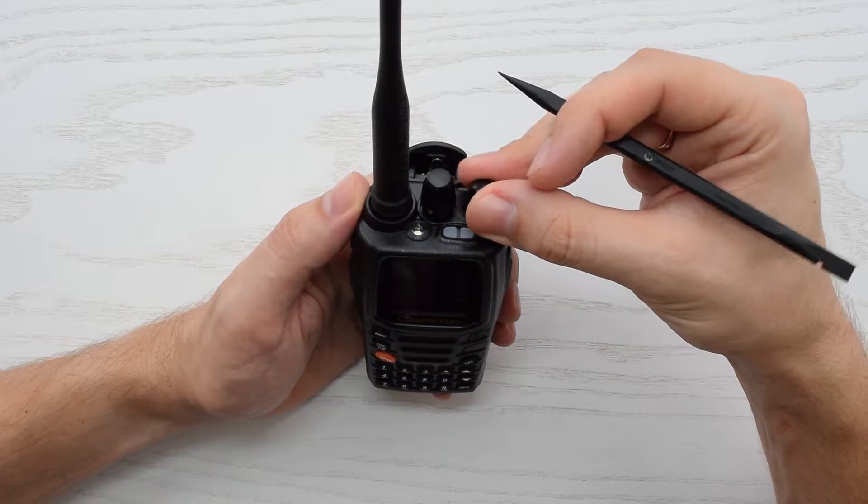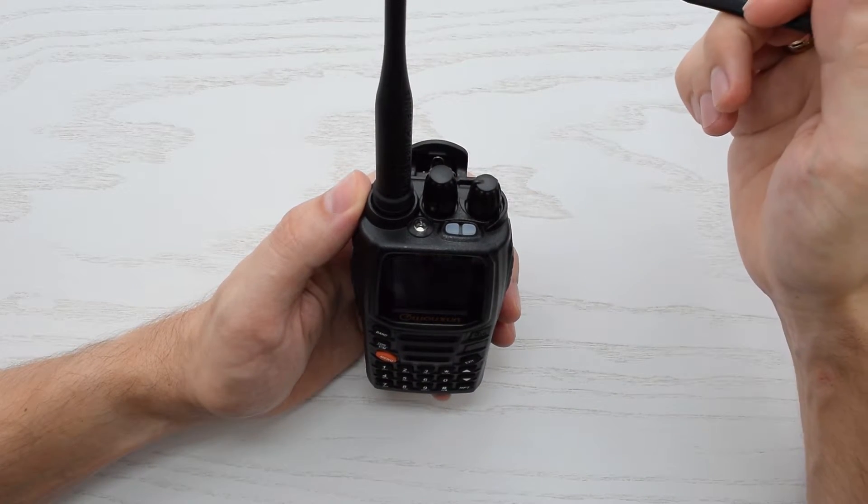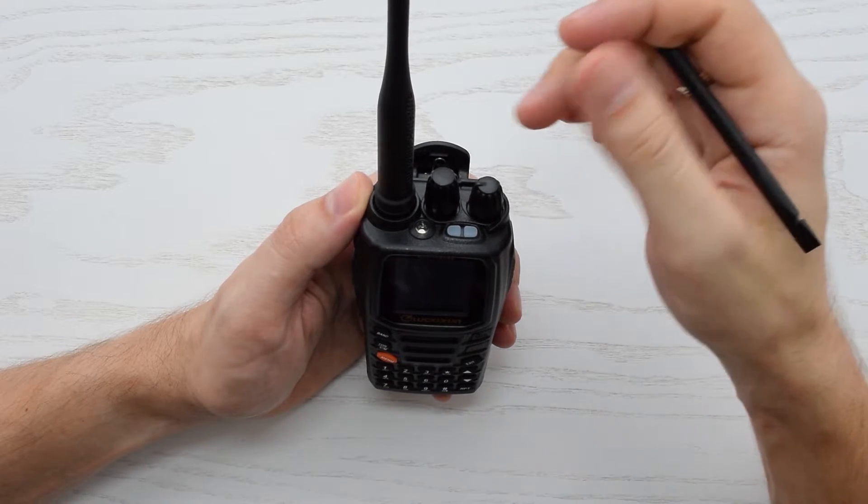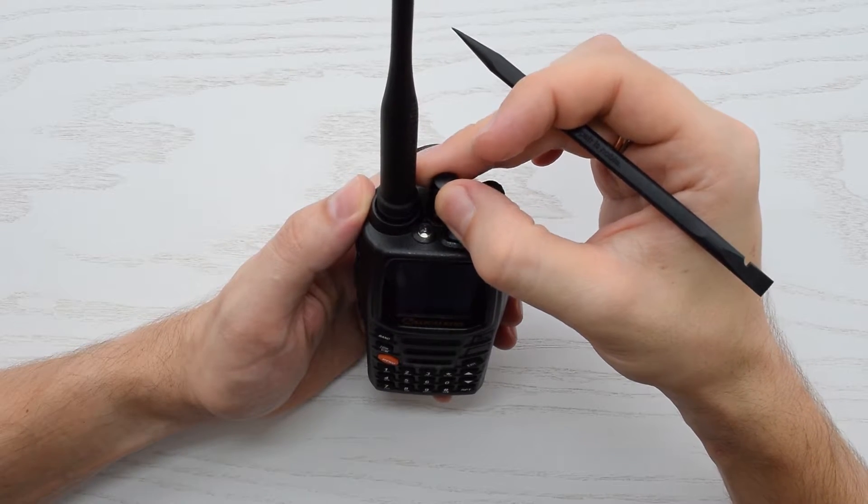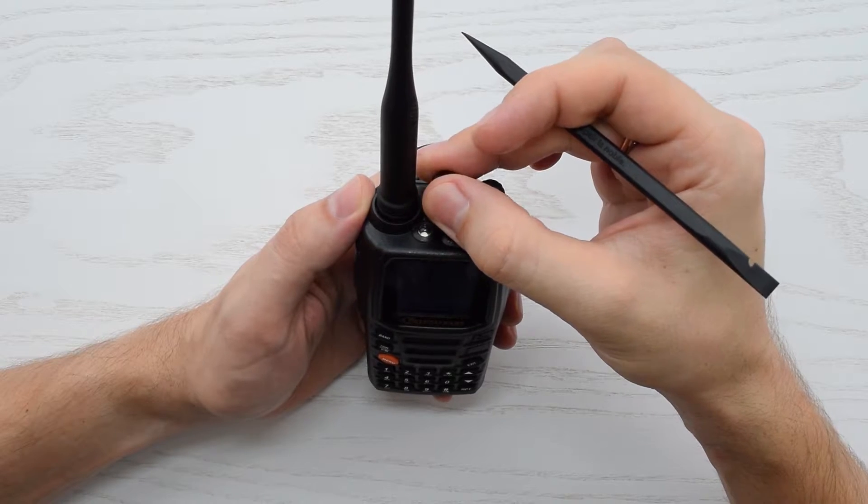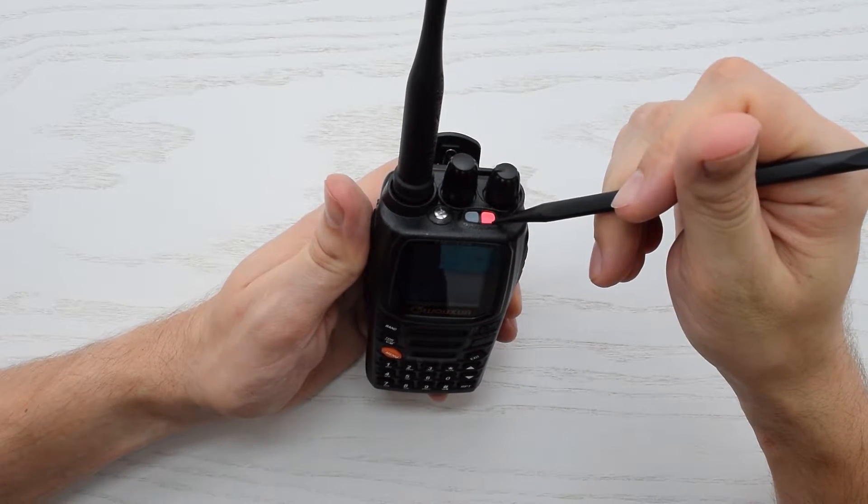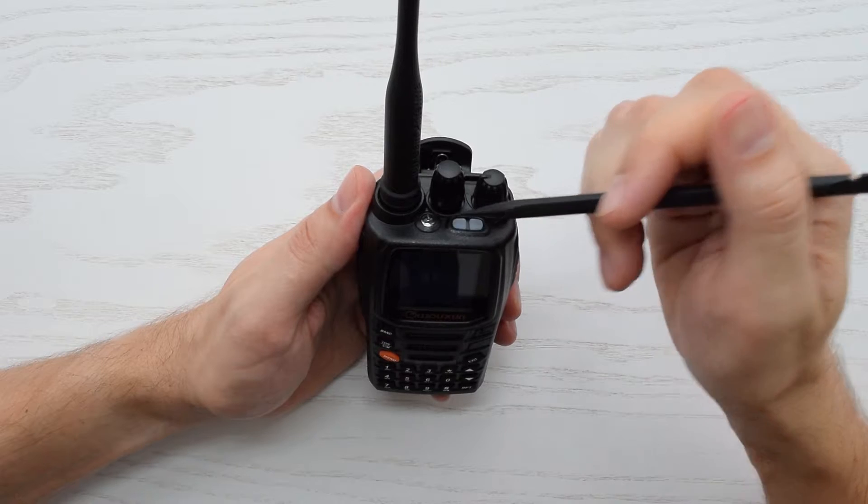On the top of the radio we have a volume knob with power switch, the dial knob for setting the frequency, menu selections and other adjustments. Transmit receive LED indicators and pretty bright LED flashlight.